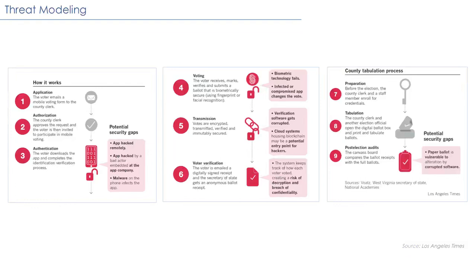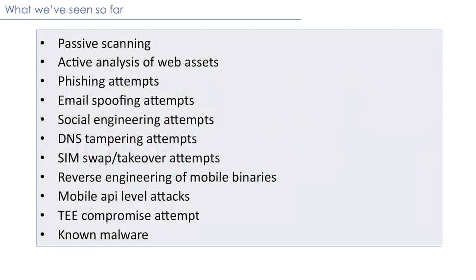Now that we've looked at the high-level threat model, let's look at what kinds of threats we've seen in the wild over the last couple of years. We like to group them into a few categories: threats at the device level, threats at the network level — user-centric scenarios — and overall threats to the cloud infrastructure and our corporate network.